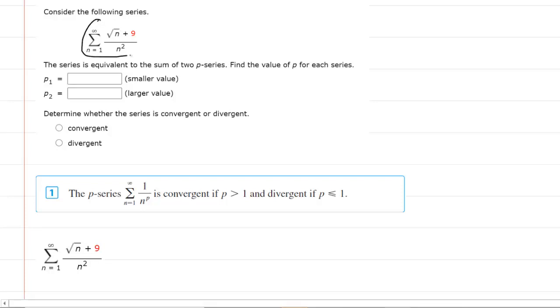We are given a series in this question that is equivalent to the sum of 2 p-series. This means we have to take our series and rewrite it so that it is the sum of 2 p-series.